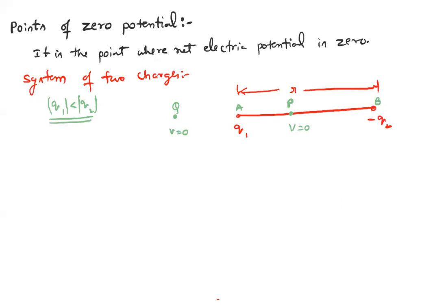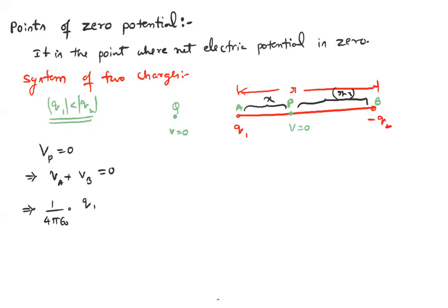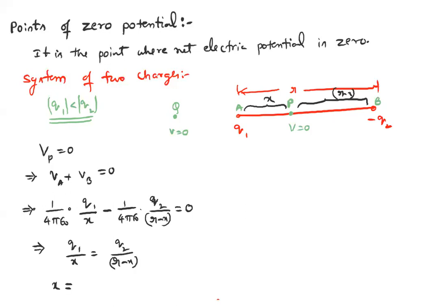Assume point P is located at a distance x from q1, so it is at a distance r minus x from q2. Setting net electric potential at P equal to zero: (1/4πε₀)(q1/x) minus (1/4πε₀)(q2/(r−x)) = 0. This gives q1/x = q2/(r−x). On simplification, x = r / (q2/q1 + 1). This is the interior point where net electric potential is zero.